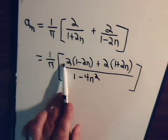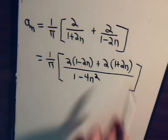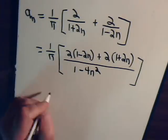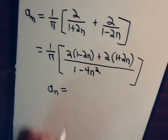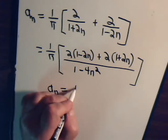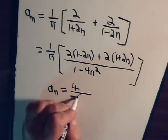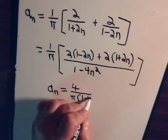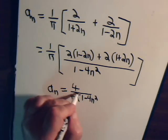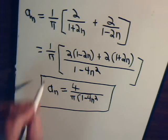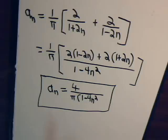And here we have minus 4n and here we have plus 4n, so those cancel. And 2 plus 2 is 4. So we'll have a sub n is equal to 4 over π(1-4n²). So here's our expression for a sub n.